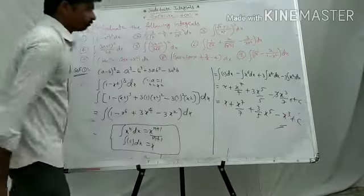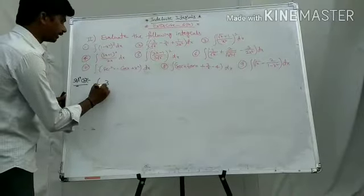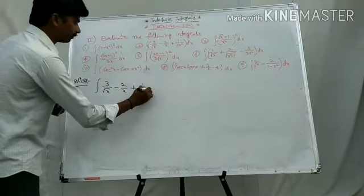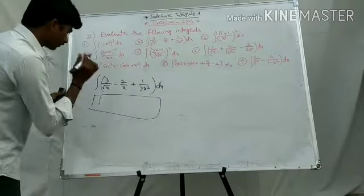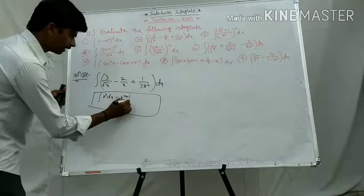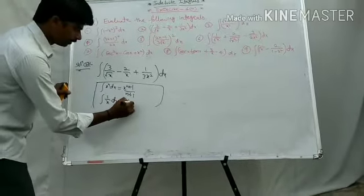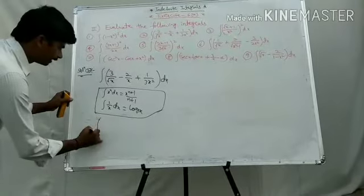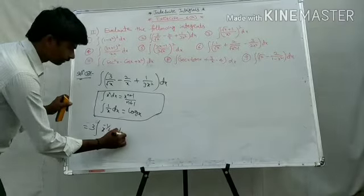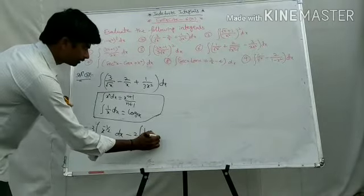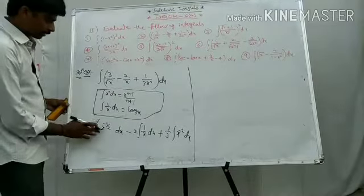Second solution: integral of (3 by root x minus 2 by x plus 1 by 3x squared) dx. Using the formulas: integral x to the power n dx equals x to the power (n plus 1) by (n plus 1), and integral of 1 by x dx equals log x. Applying these formulas: 3 times integral of x to the power minus 1 by 2 dx minus 2 times integral of 1 by x dx plus 1 by 3 times integral of x to the power minus 2 dx.